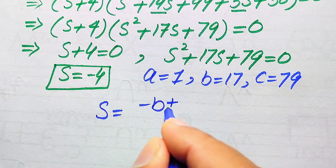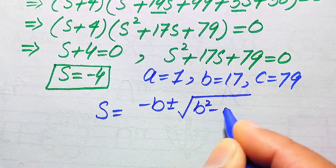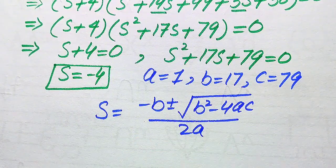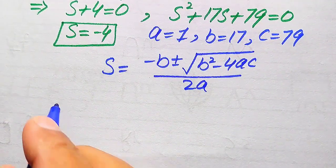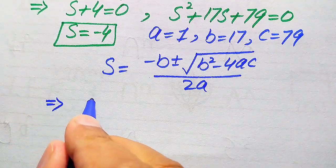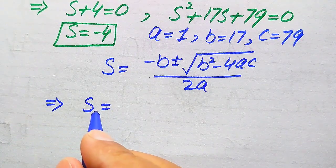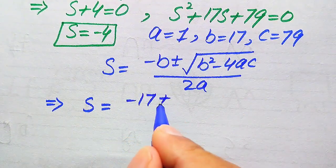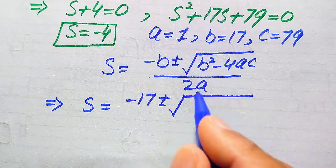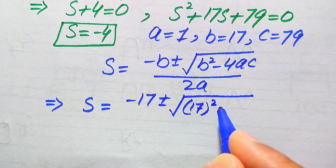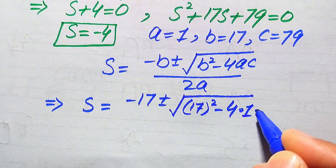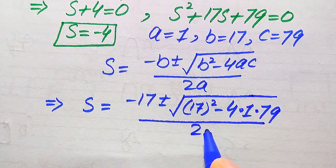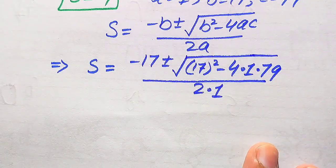The quadratic formula is: s = (−b ± √(b² − 4ac)) / (2a). Substituting our values: s = (−17 ± √(17² − 4(1)(79))) / (2 × 1).